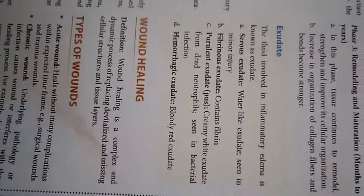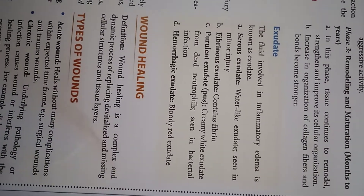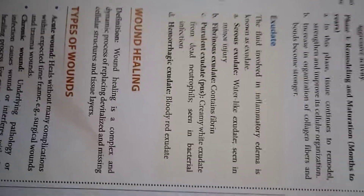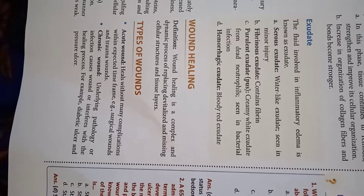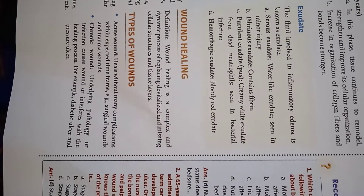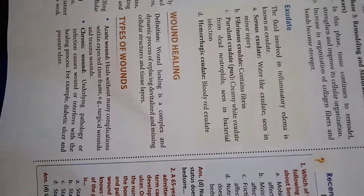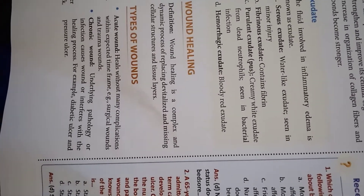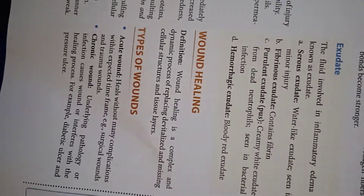Bone healing is a complex and dynamic process of replacing devitalized cellular structures and tissue layers. Types of wounds: an acute wound heals without any complications within the expected time frame — surgical wounds and trauma wounds are examples. A chronic wound has an underlying pathology or infection that causes or interferes with the healing process, for example diabetic ulcers and pressure ulcers.